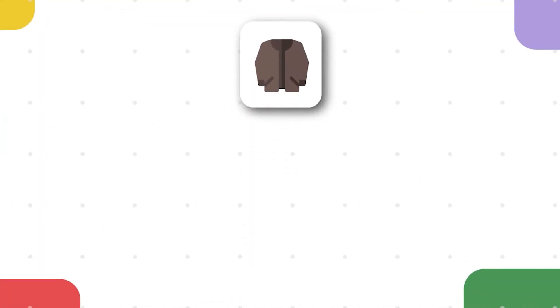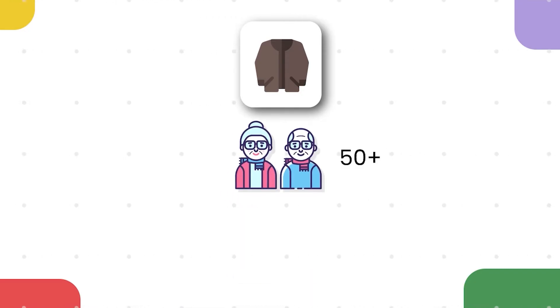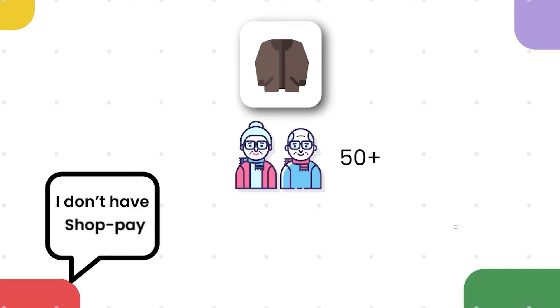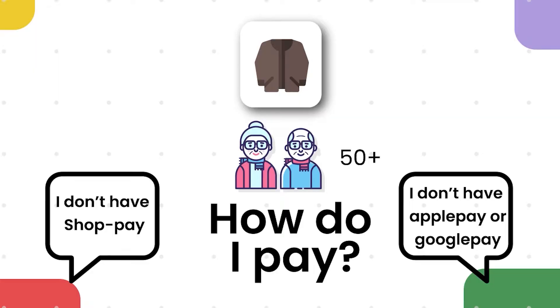The reason we first found this is we had a company that sold leather jackets to a slightly older demographic — 50 plus — and there was major confusion around what those buttons were. They had lots of phone calls and emails saying 'I don't have Shop Pay or Apple Pay or Google Pay, so how do I pay?' We didn't have much control over Shopify in that area, so we made this change and it instantly fixed the problem.